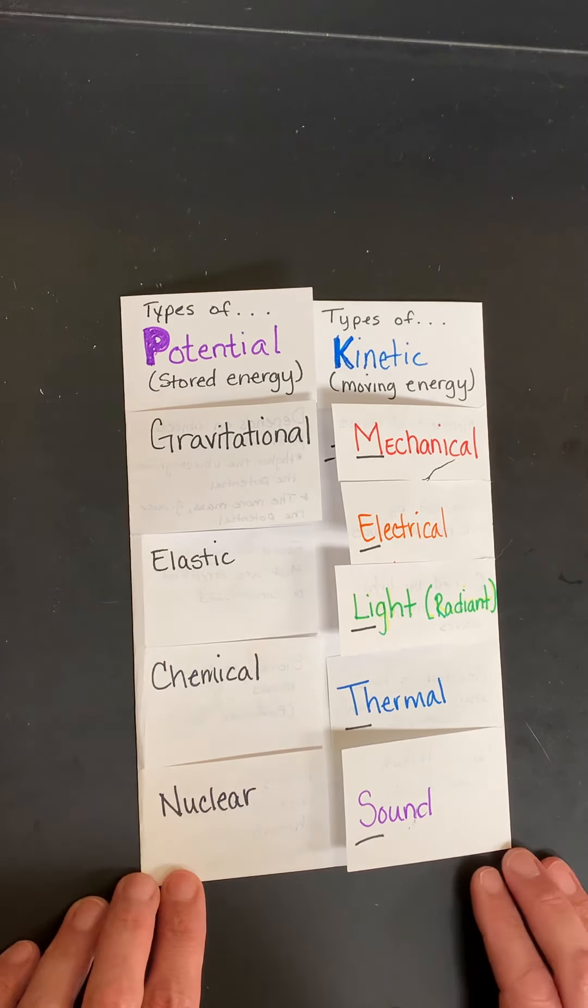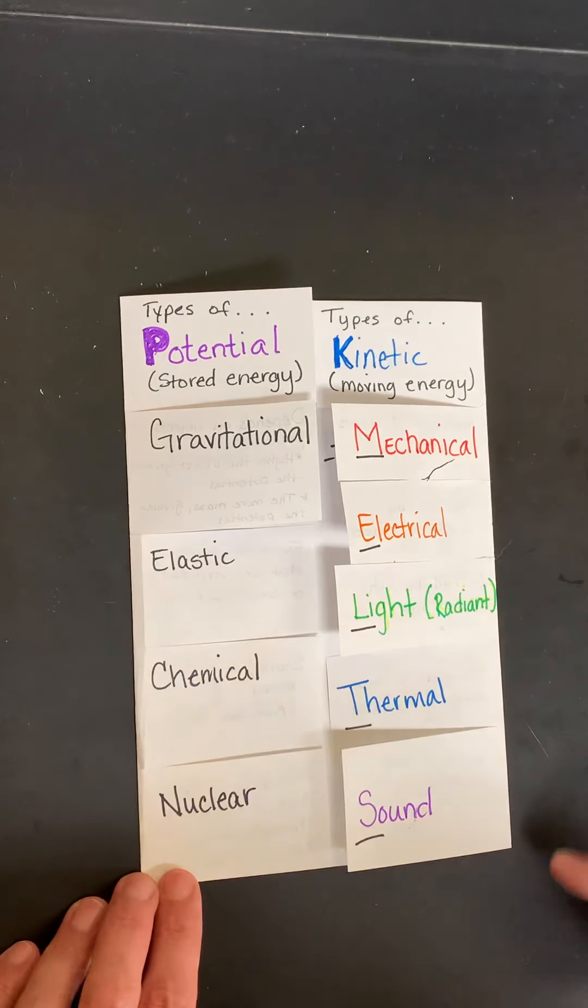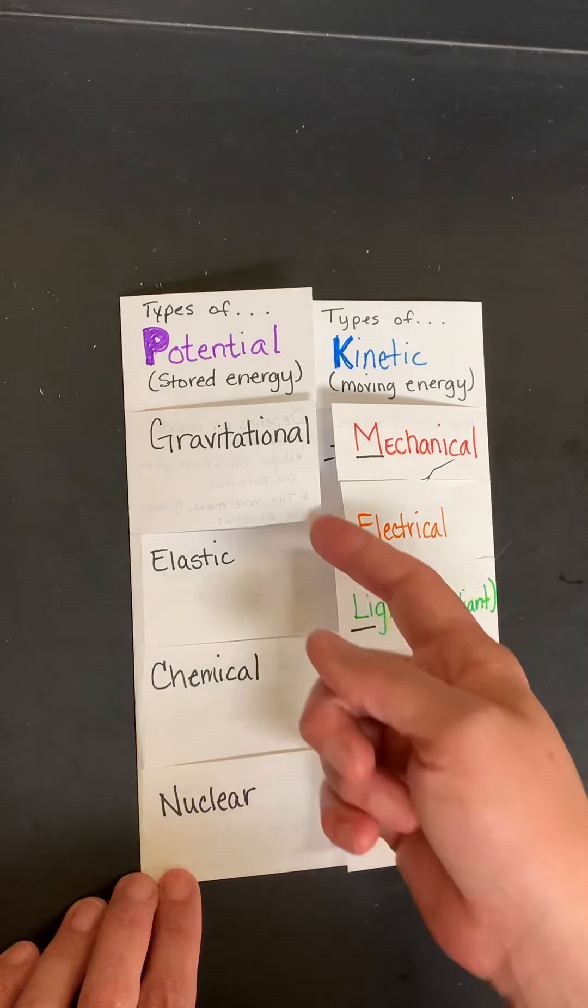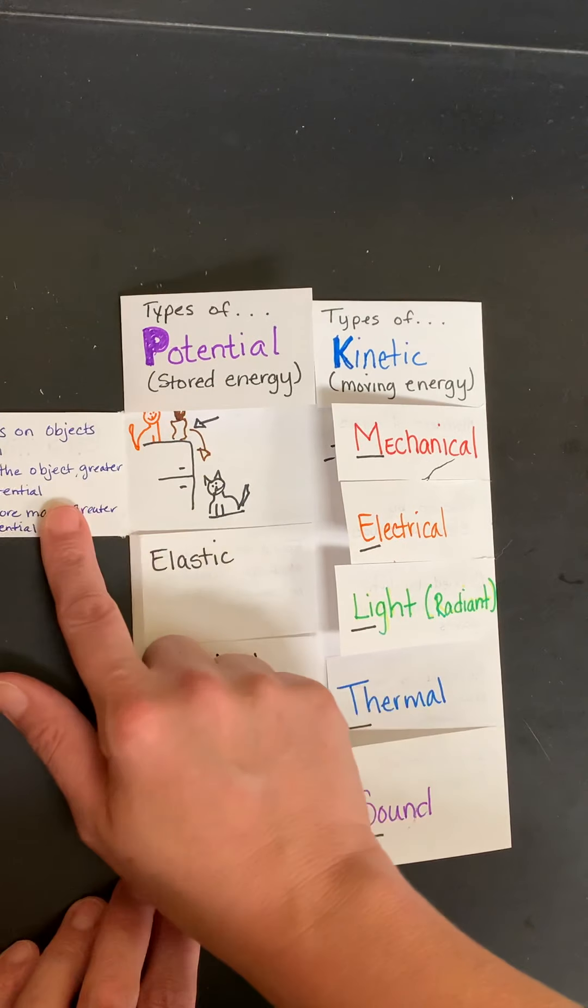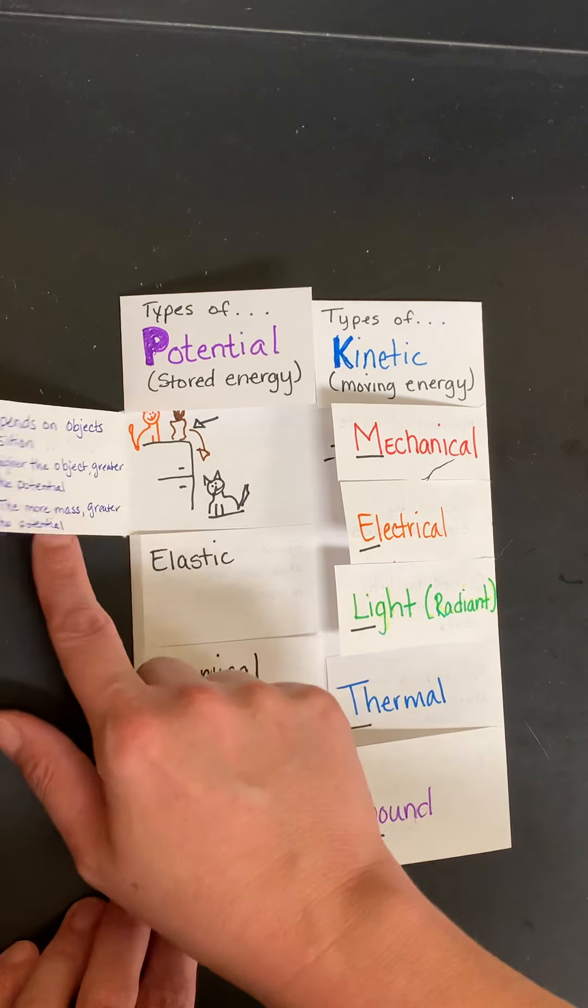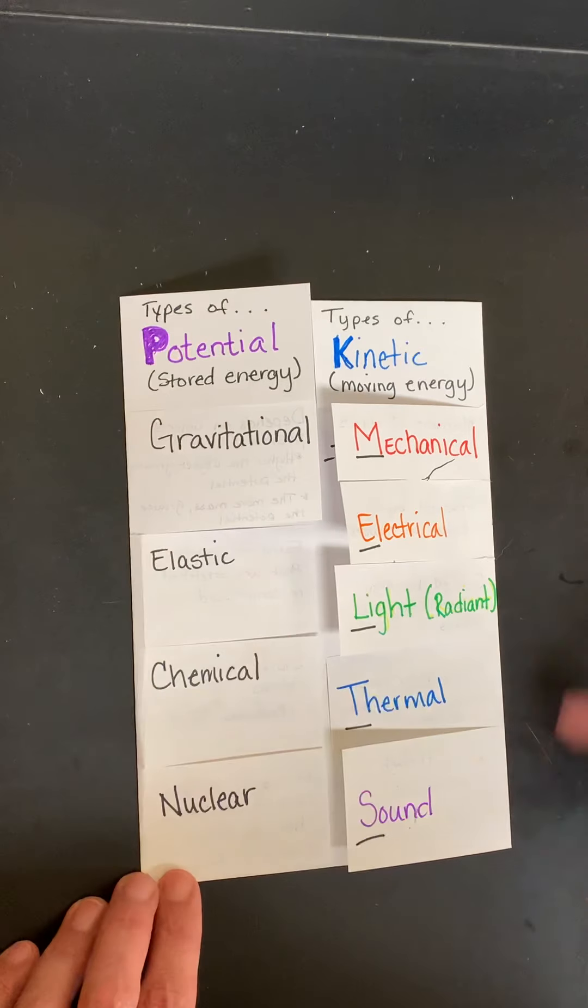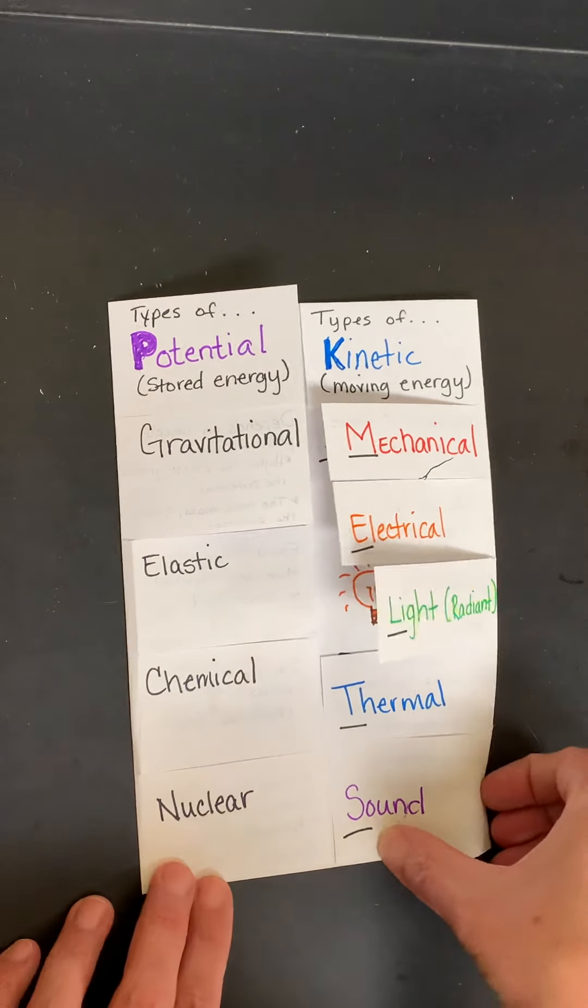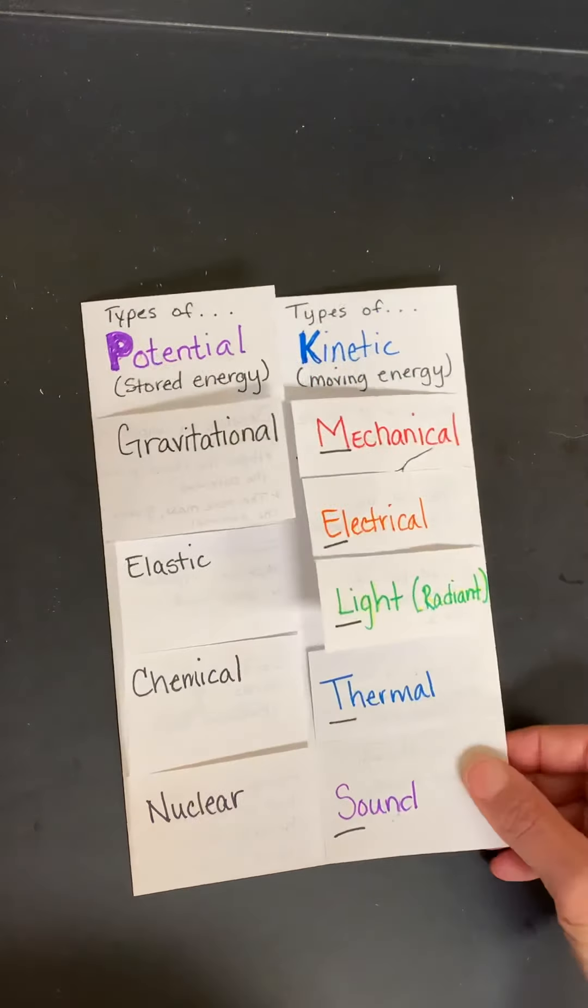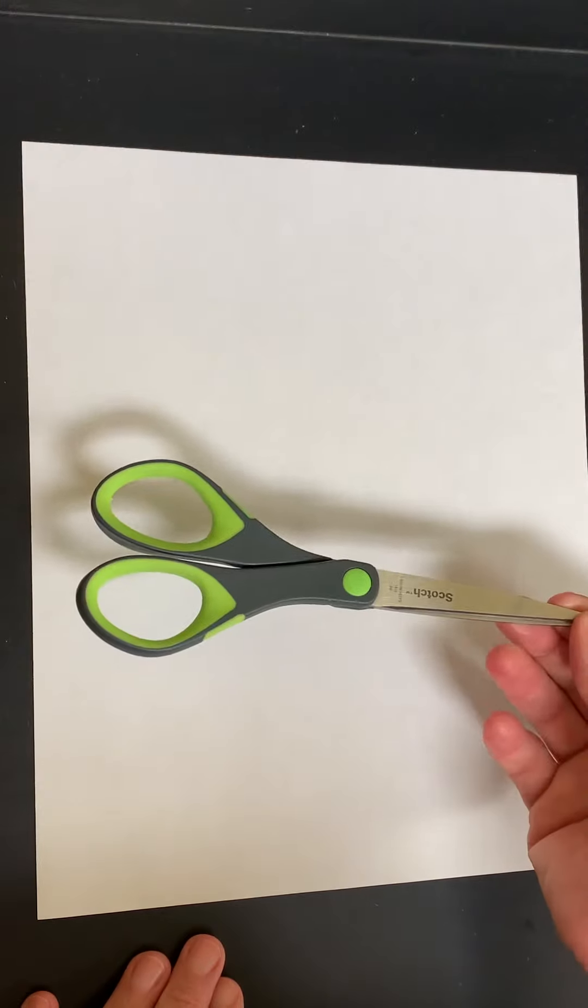Let's go ahead and get started. You're going to create a set of notes that looks just like mine with the different types of energy, the definition, and then a picture that you can use to help you remember this. Before we get started, we first have to set up our notes. To do that, you're going to need a blank sheet of paper, blank on both sides. You're also going to need a pair of scissors and some markers or a pencil, a writing utensil of some kind.